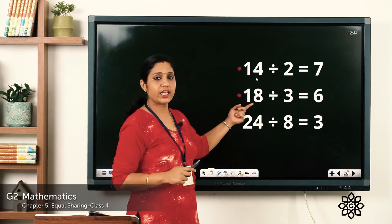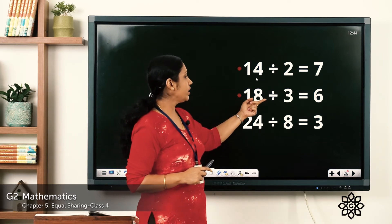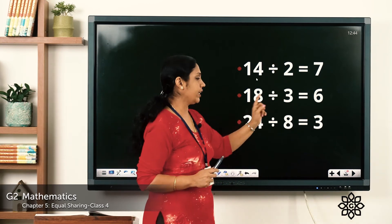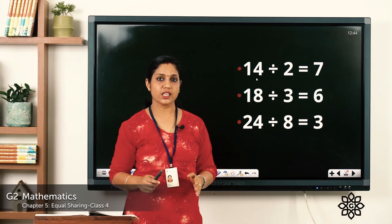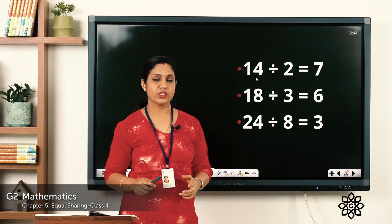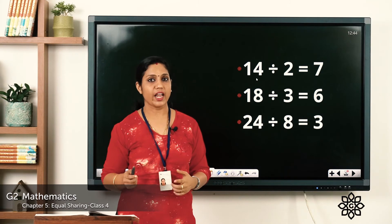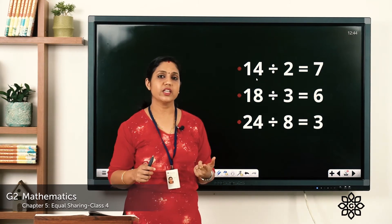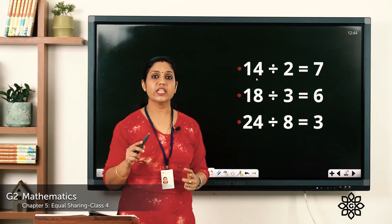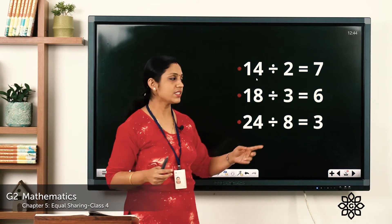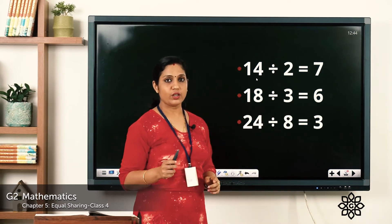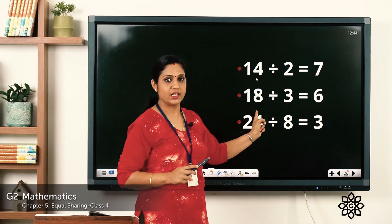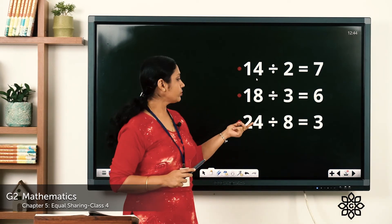Next, 18 divided by 3. Say the table of 3: 3 ones are 3, 3 twos are 6, 3 threes are 9, 3 fours are 12, 3 fives are 15, 3 sixes are 18. So we reach 18 — 3 sixes are 18, meaning the answer is 6. Check: 3 sixes are 18 — yes, our answer is correct.